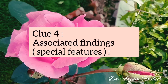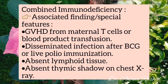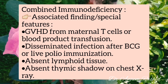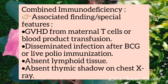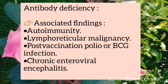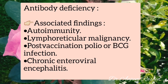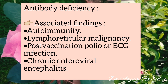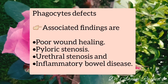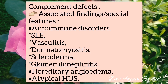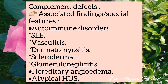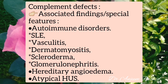The fourth clue is associated findings. In combined deficiency: graft-versus-host disease from maternal T cells or blood product transfusion, disseminated infection after BCG or live polio immunization, absent lymphoid tissue, and absent thymic shadow on chest X-ray. In antibody deficiency: autoimmunity, lymphoreticular malignancies, post-vaccination polio or BCG infection, and chronic enteroviral encephalitis. In phagocytic defects: poor wound healing, pyloric stenosis, urethral stenosis, and inflammatory bowel disease. In complement defects: autoimmune disorders such as SLE, vasculitis, dermatomyositis, scleroderma, glomerulonephritis, hereditary angioedema, and atypical hemolytic uremic syndrome.